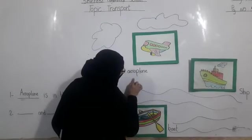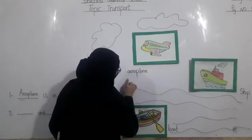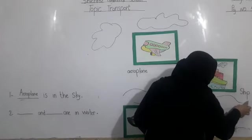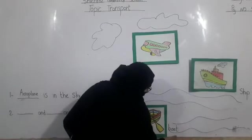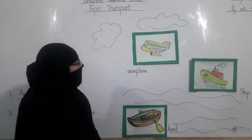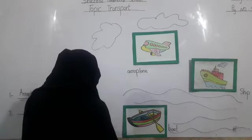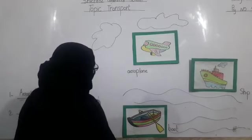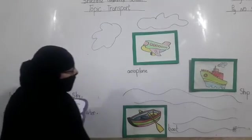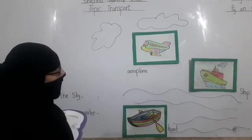Aeroplane. Ship. Boat. Aeroplane flies in the air — this is air transport. Boat and ship move in water.